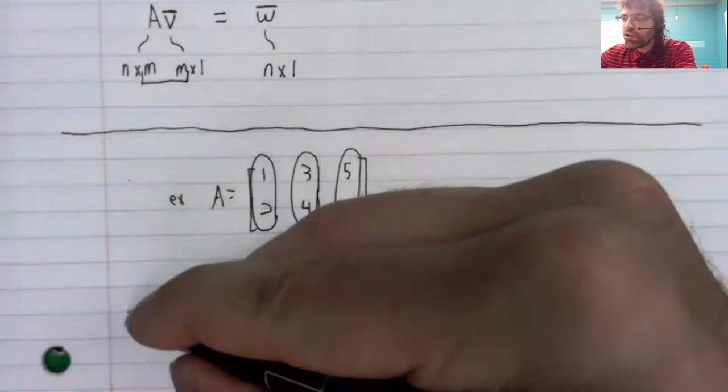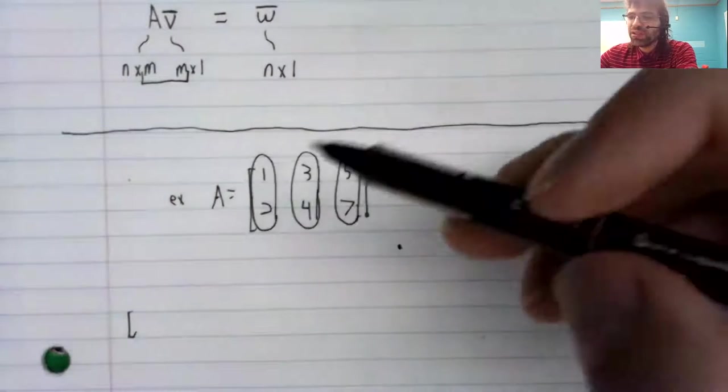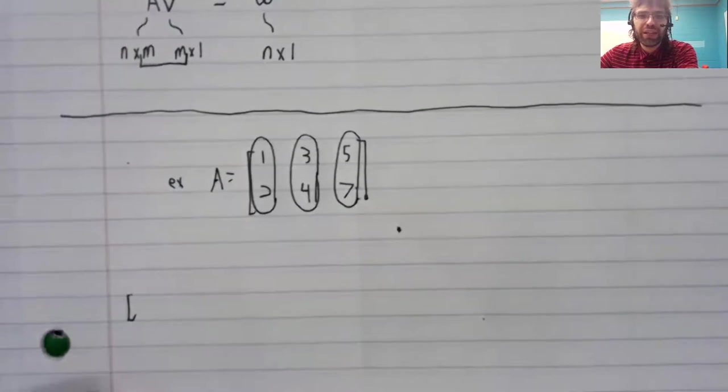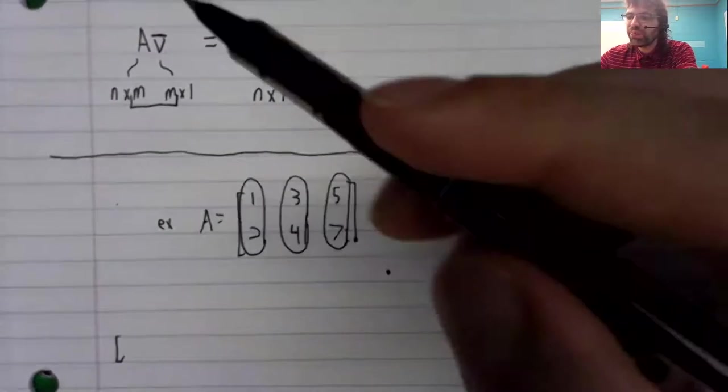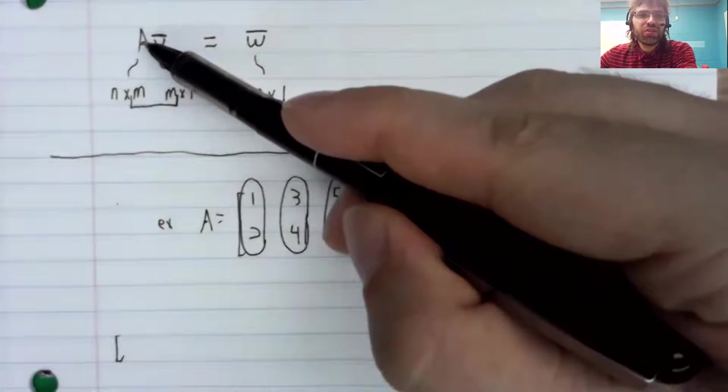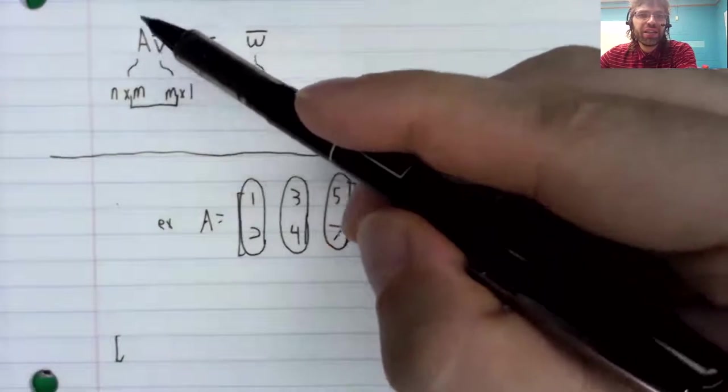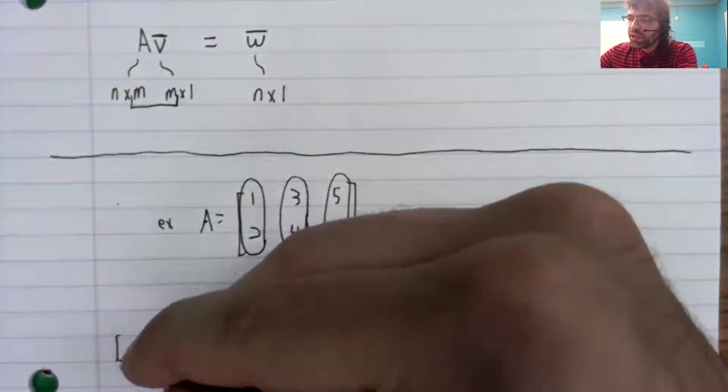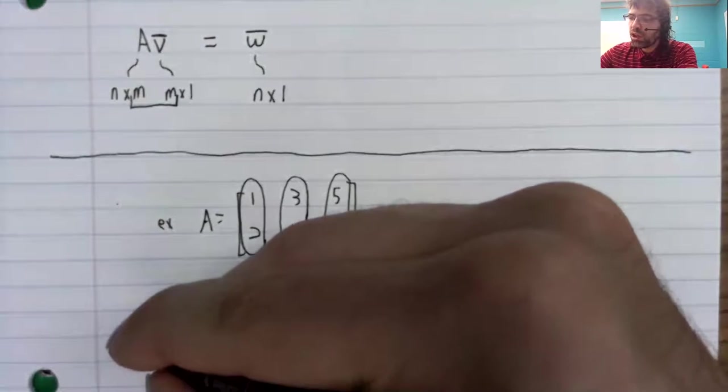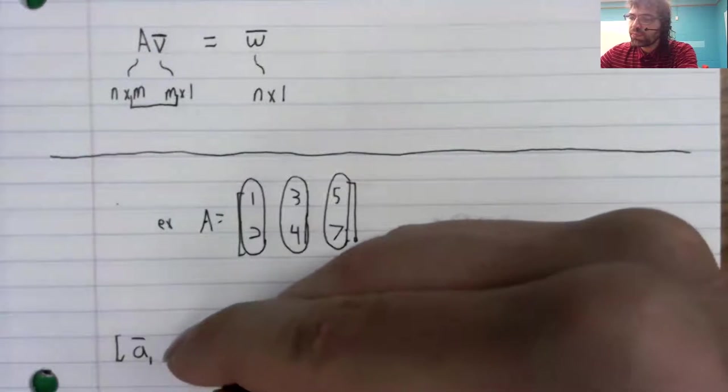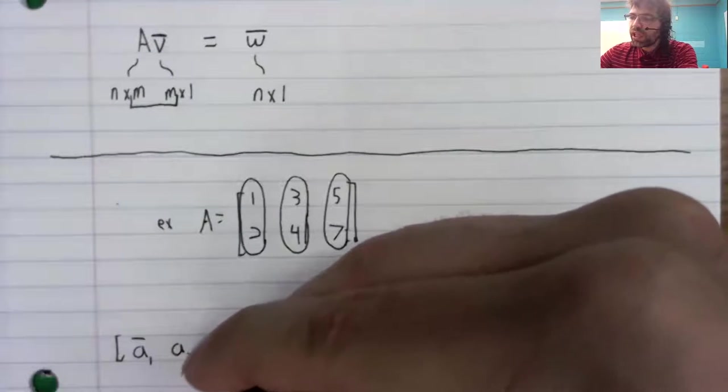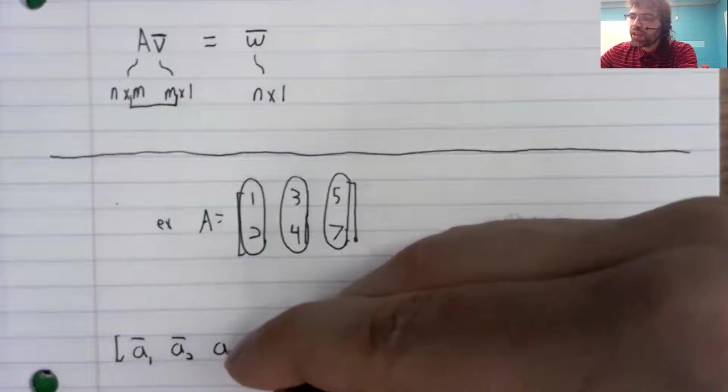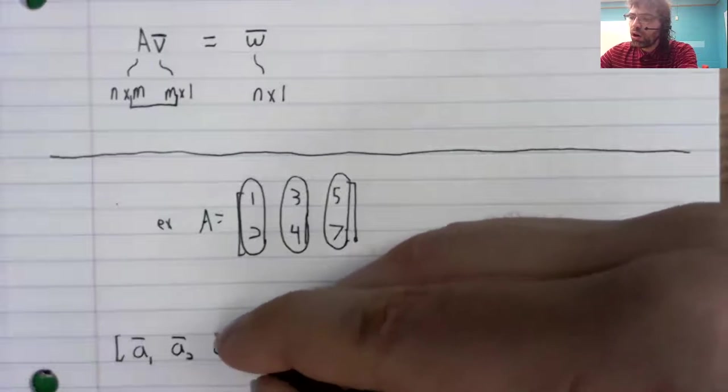So you can think of this matrix as being kind of a vector storage unit. And let's think of this matrix A in those terms. It's got its first column, its second column, and so on.